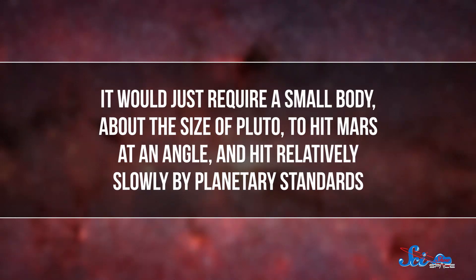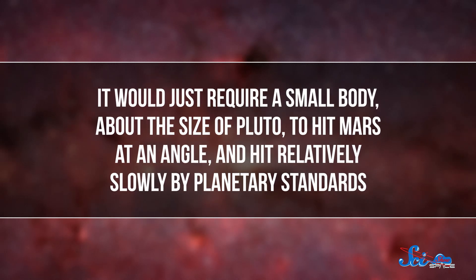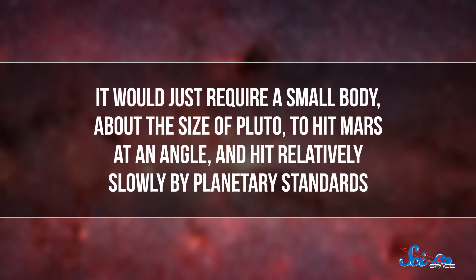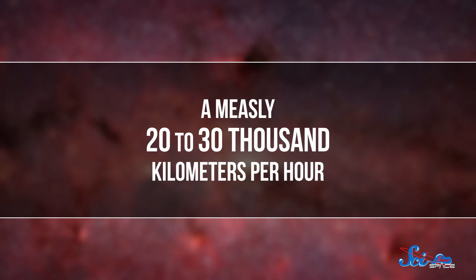It would just require a small body about the size of Pluto to hit Mars at an angle, and hit relatively slowly by planetary standards, a measly 20,000 to 30,000 kilometers per hour. Under these conditions, the molten rock made by the impact would have been mostly confined to the crater itself, making the plains we see today.